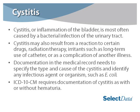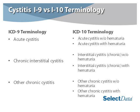ICD-10 requires documentation of cystitis as with or without hematuria. As you see in ICD-9 versus ICD-10 terminology, in ICD-9 we had acute, chronic interstitial, or other chronic cystitis. Now in ICD-10, we continue to have those three diagnoses, but all with or without hematuria is now provided separately.